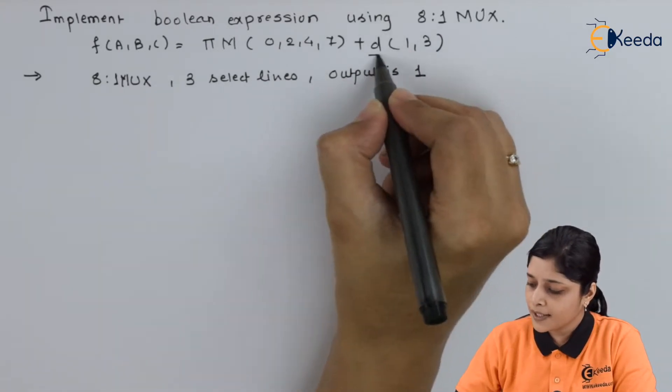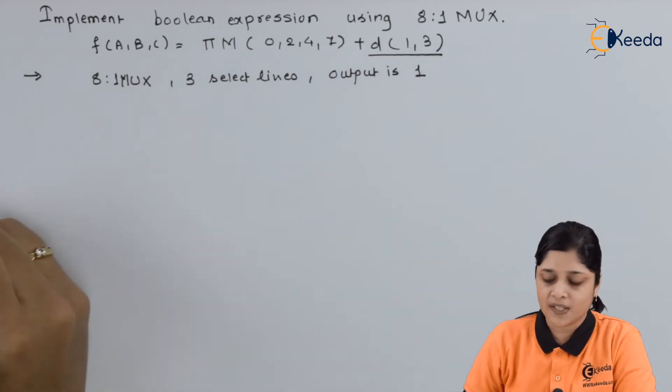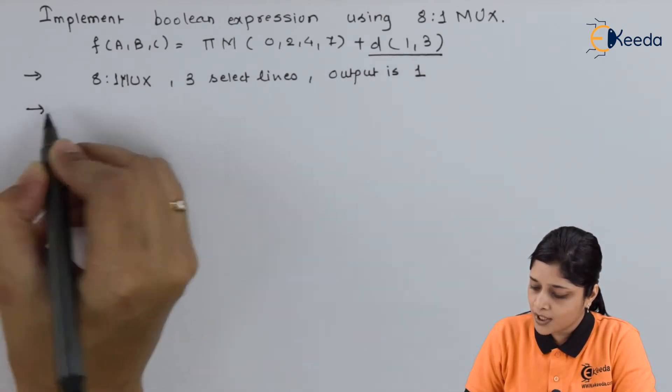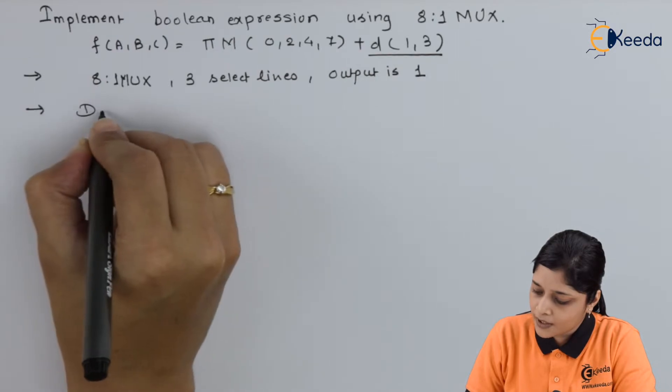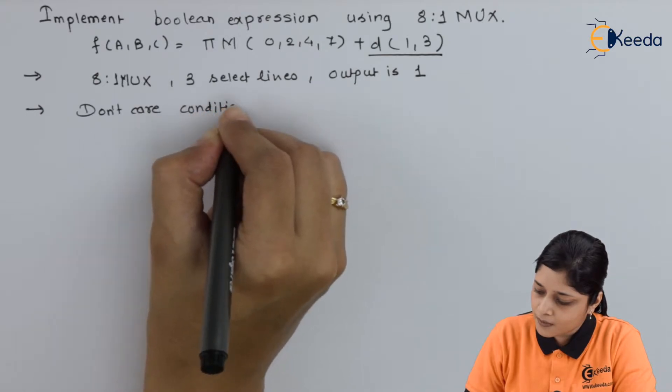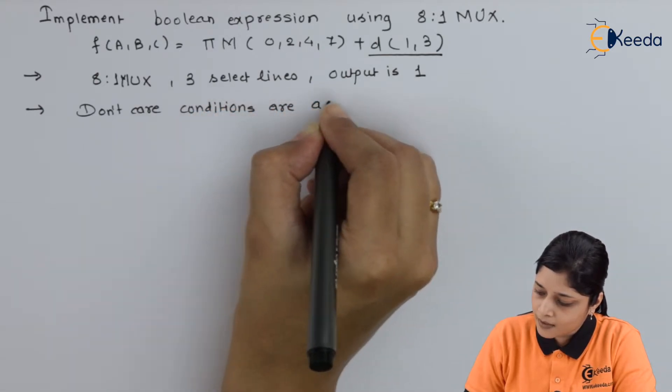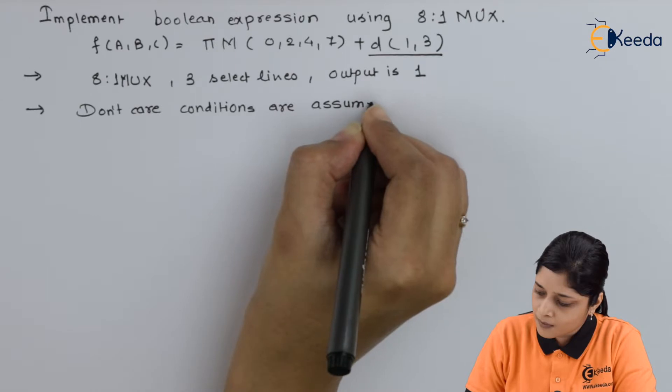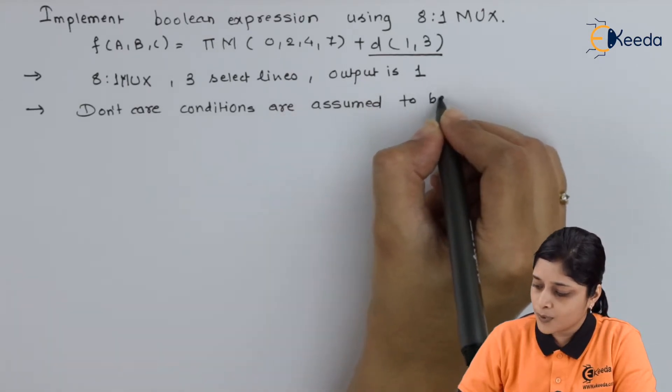Now you can find here don't care conditions are present. So the logic is don't care conditions assume to be logic 1. Don't care conditions are assumed to be logic 1.